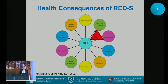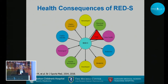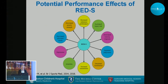The IOC diagrams originated with Nama Constantini from Israel. They keep the triad because it has so much research behind it, but also emphasize that there could be endocrine, metabolic, and hematologic effects — ten different health consequences and ten different potential performance consequences, including increased injury risk, training response, and judgment.